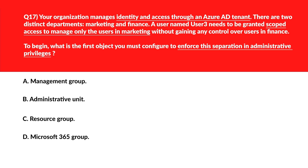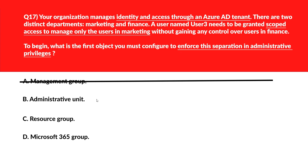This question is about separating administrative privileges. Option A: Management Group organizes subscriptions for policy inheritance and has no scope for user-based role delegation in Azure AD. Incorrect. Option B: Administrative Unit enables scoping administrative permissions to a subset of users, aligning precisely with the department-based delegation requirement. Keeping this.